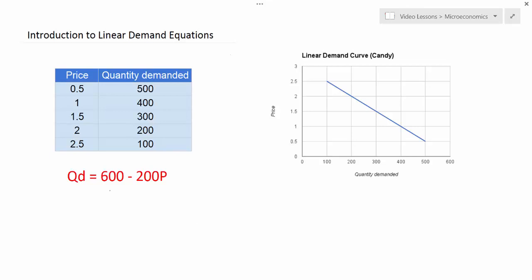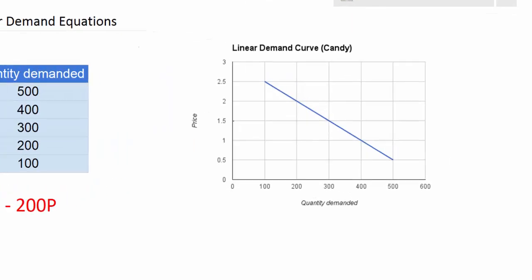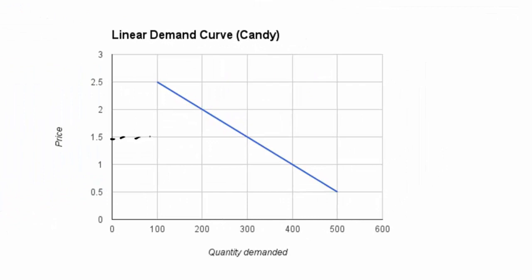First, let's go through a quick demonstration of how we can use our demand equation to calculate the different quantities demanded at different prices. Of course we have our demand schedule and our demand curve, and it's pretty easy to see from those the quantity demanded at any particular price. For example, at a dollar fifty, you can see on our demand curve that exactly three hundred units of candy are demanded weekly by my students.